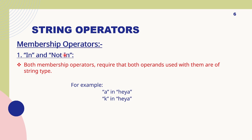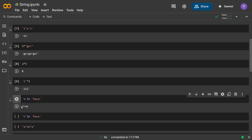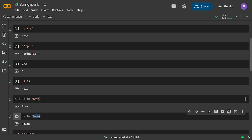Next are membership operators — they tell us about the presence of an element in another string. For example, 'a in here' checks if 'a' is present in the string 'here'. If it is present it displays True, and if not — like 'k in here' — it displays False. Let's see: 'a in here' gives True as 'a' is present, and 'k in here' gives False as 'k' is not in the string.